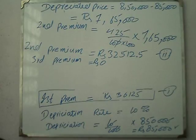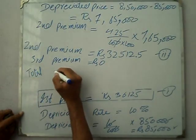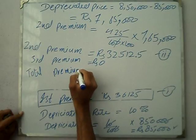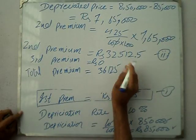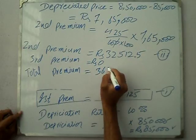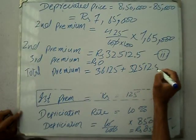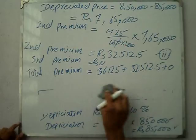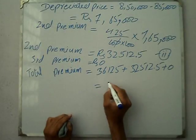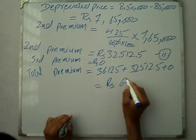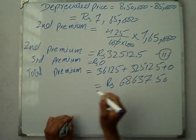So total premium — we find the total amount paid. First, second, and third premiums are added together. First premium is Rs. 36,125, second premium is Rs. 32,512.50, third premium is Rs. 0. Total premium comes to Rs. 68,637.50.